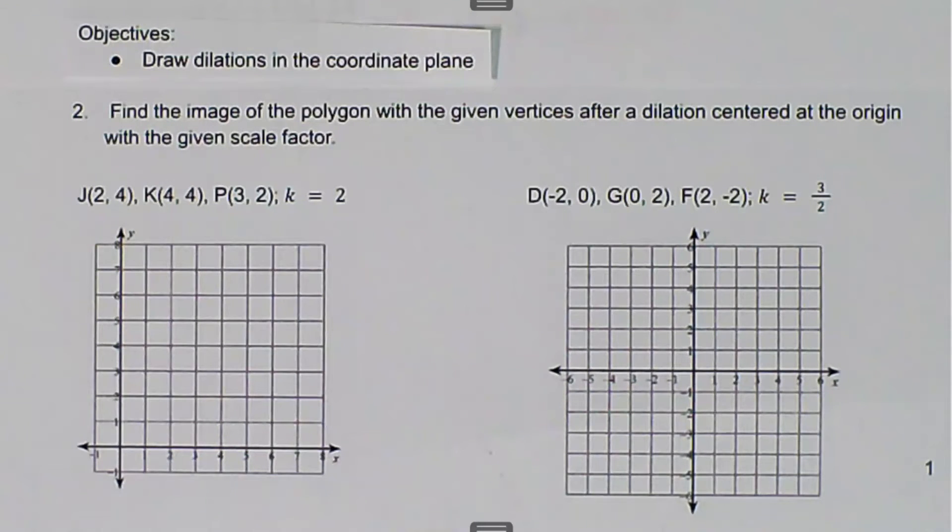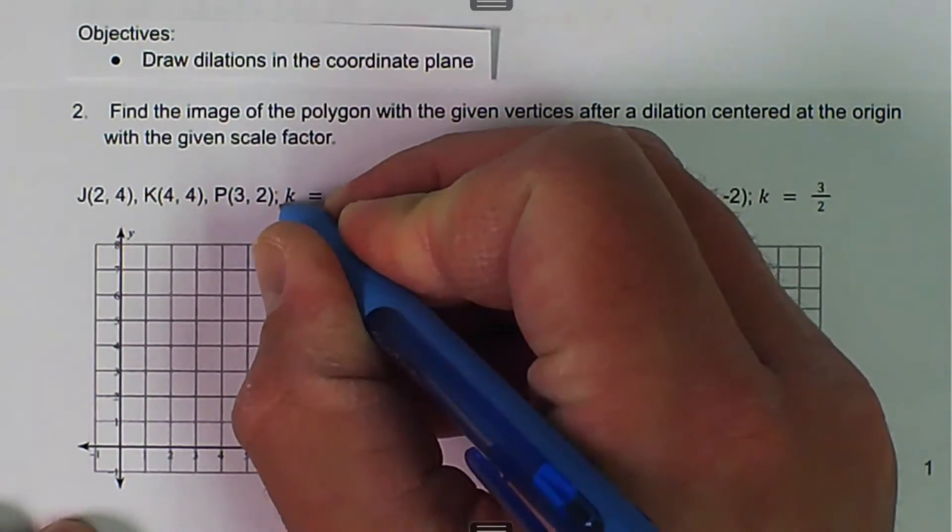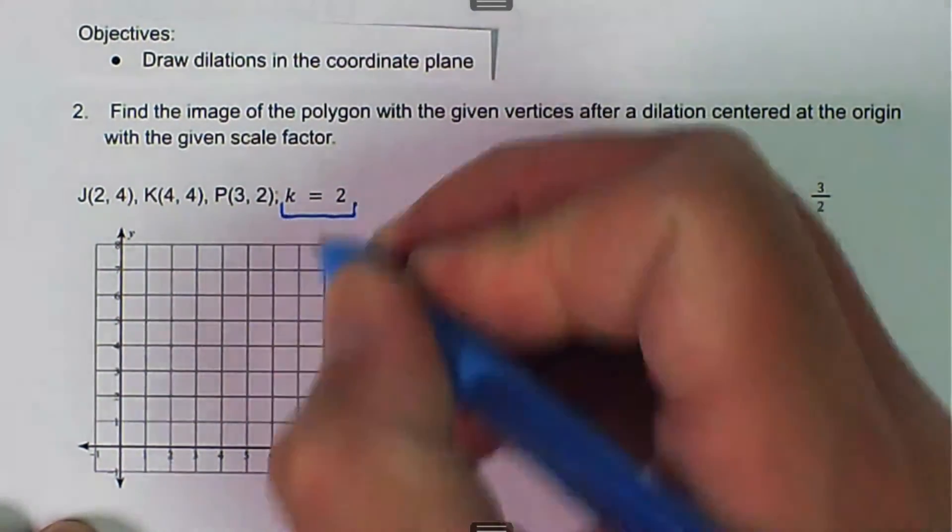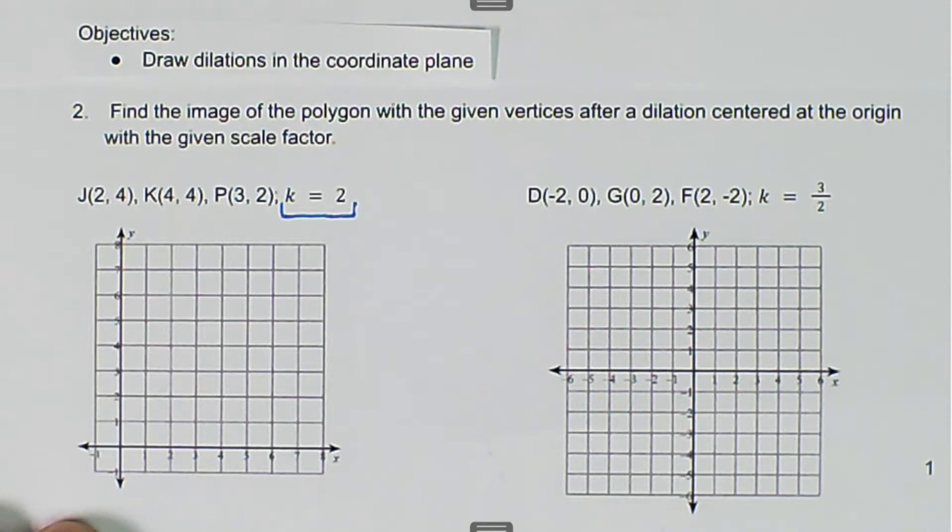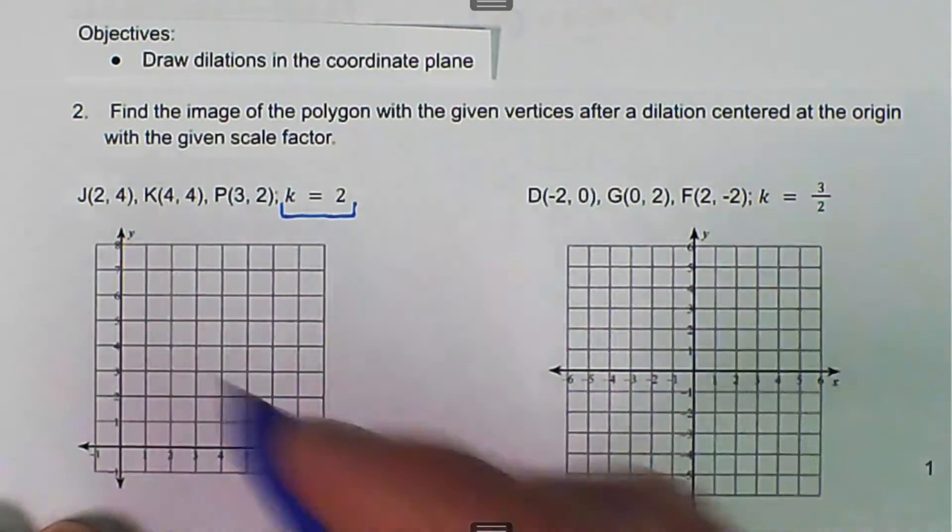We are talking about dilation, and we want to draw dilations in the coordinate plane. So here we have example 2, and it says, find the image of the polygon with the given vertices after dilation centered at the origin with the given scale factor.